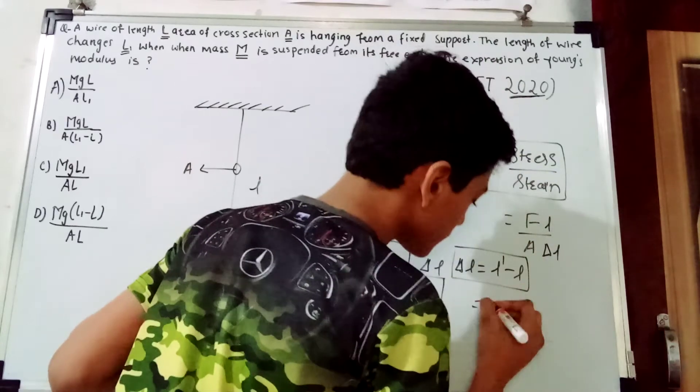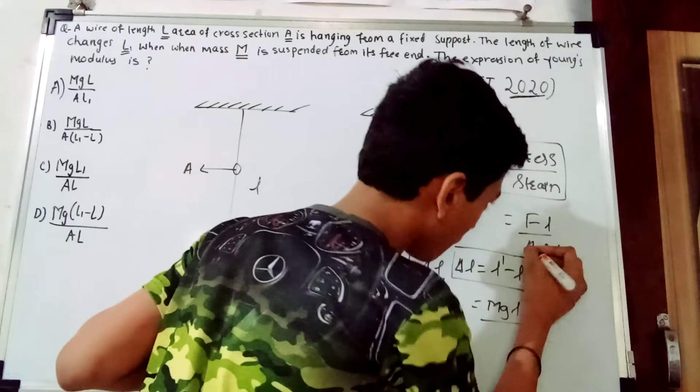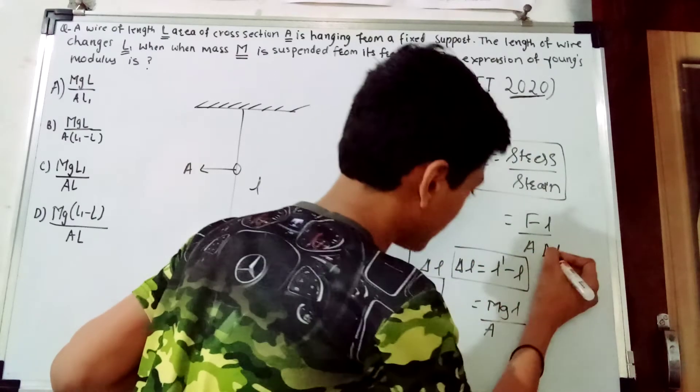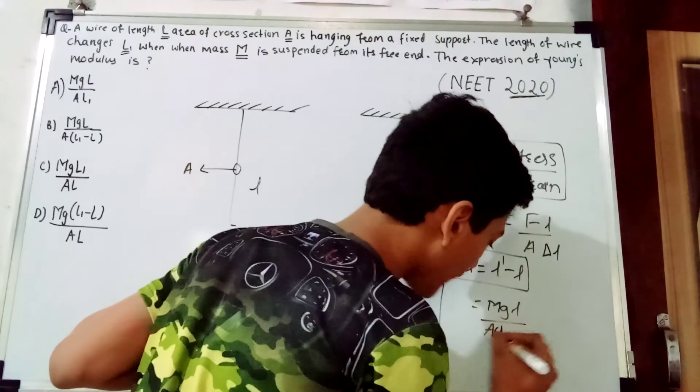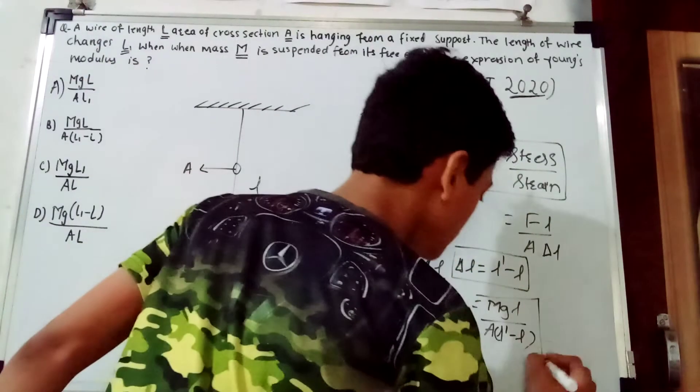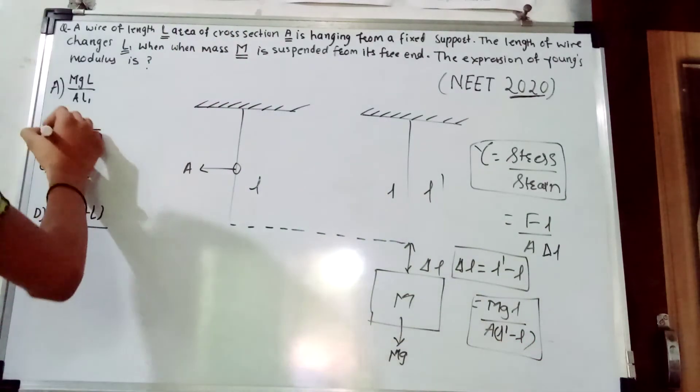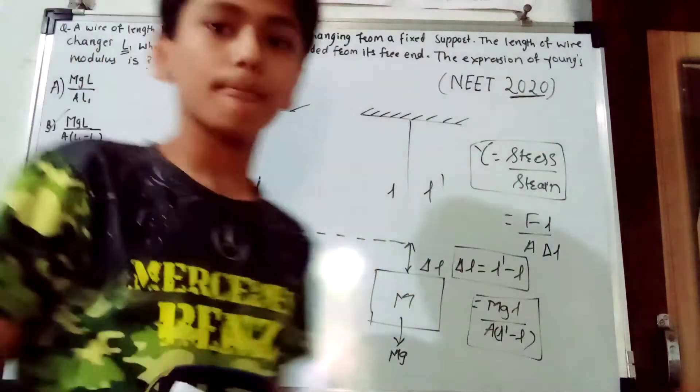So force is Mg, original length is L, area is A, and delta L is L' minus L. The answer is MgL upon A into L' minus L, and the correct option is option B.